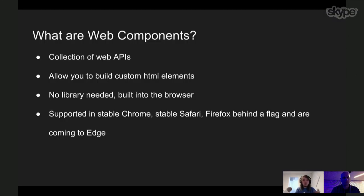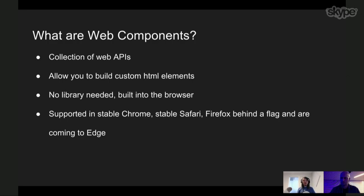So let's go over what web components are. They've been around for a while — Chrome started some really early work on them. Polymer, a library for building web components, has been around a long time. There were really two different specs: the Web Components V0 spec, which Polymer 0.5 and 1 ran on, and it's a collection of web APIs that lets you build custom HTML elements built right into the browser — no library needed. It's supported now in stable Chrome and stable Safari, in Firefox behind a flag, and coming to Edge.